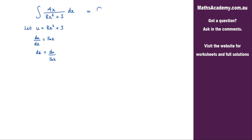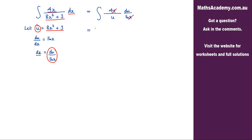We can now go ahead and substitute these back into the original integral. I'm going to leave the 4x where it is. So 4x — the 8x squared plus 3, well we know that is u, so we've got u. And the dx, well dx is now du over 16x. We can see that the x's will cancel and I've got a 4 over 16 here and that is just one quarter when we cancel it. And I can bring that outside of the integral. So one quarter, we've got the integral of one over u with respect to u, and that's a nice easy integral.